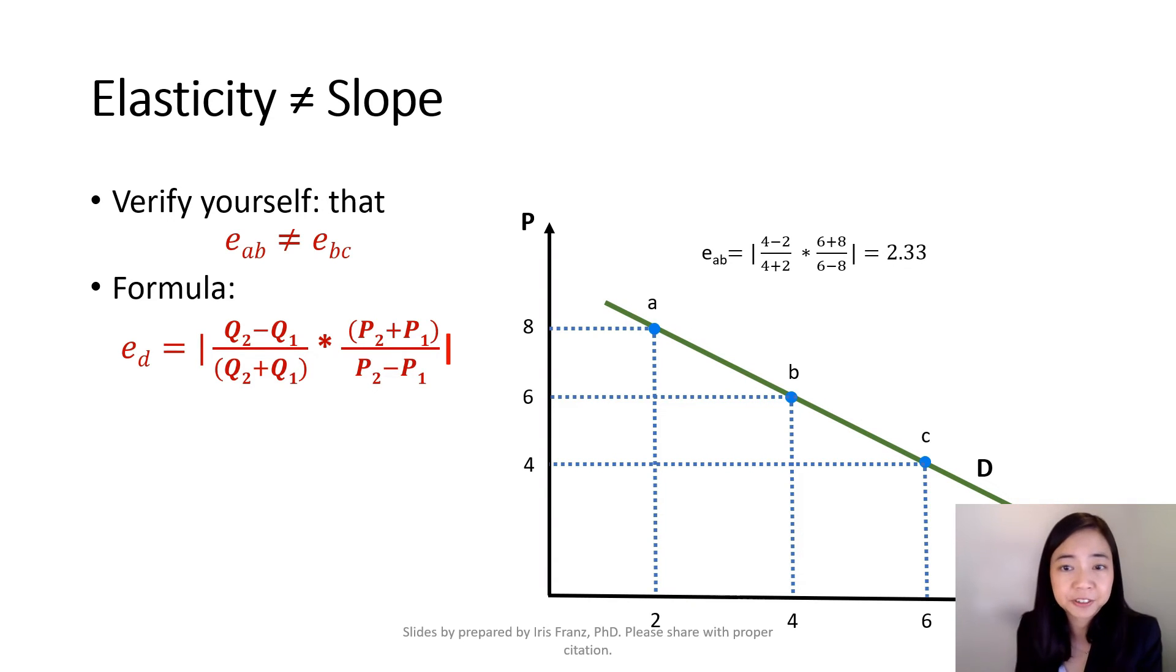Here, I calculate the price elasticity of demand from point A to B for you already. The answer is 2.33 if you take the absolute value.